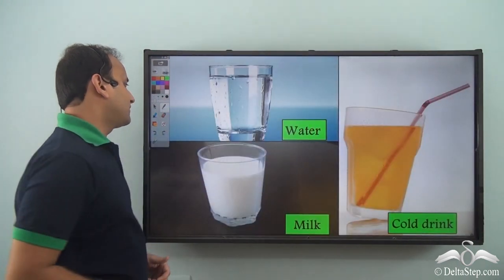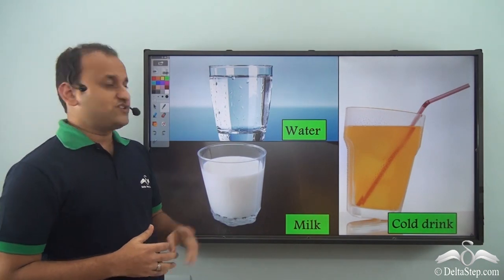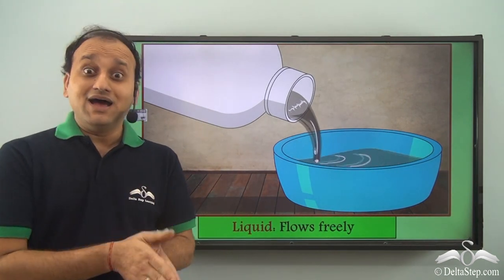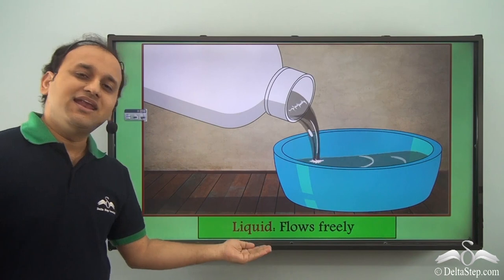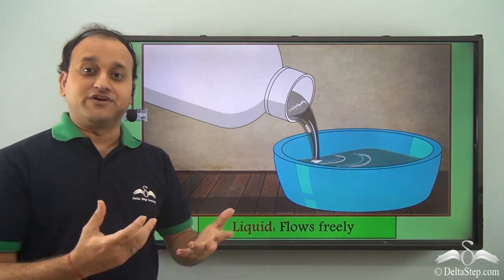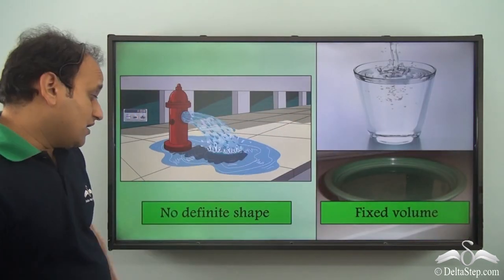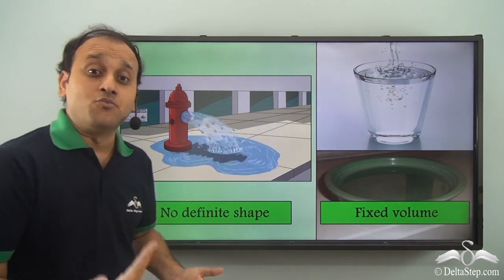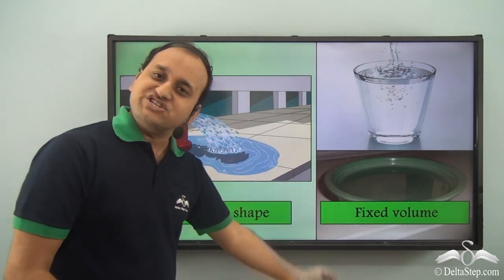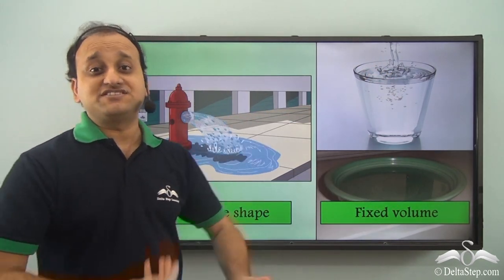Now what if I ask you to choose one of these drinks? Well, whichever you choose, you will be choosing the second form of matter — that is, liquid. Now liquid flows freely, as you can see. Whenever you pour a liquid, you will see that it flows freely. Apart from that, liquids have a very important property: they have no definite shape. That is, wherever you place the liquid, it will take the shape of its container.